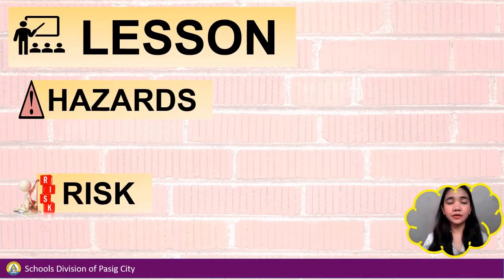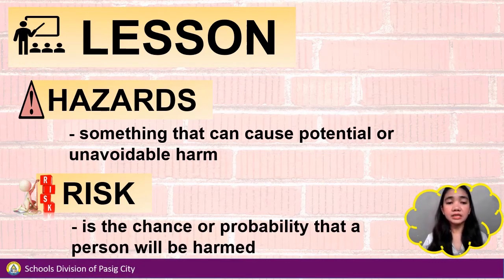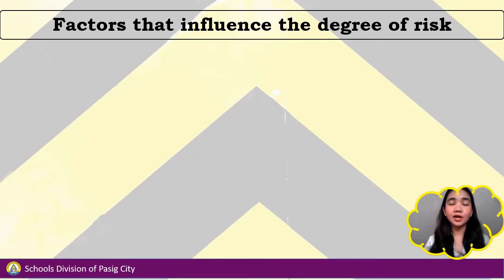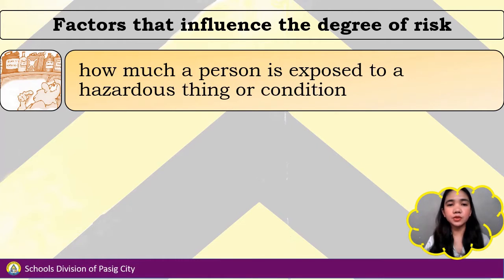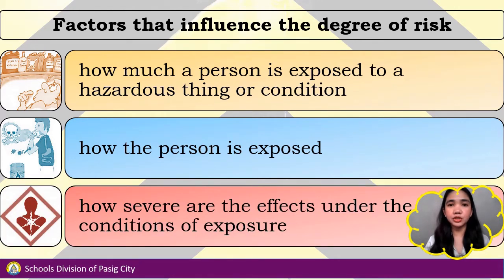Our lesson for today is about risk assessment. First, let us differentiate hazards and risk. Hazards are something that can cause potential or unavoidable harm. On the other hand, risk is the chance or probability that a person will be harmed. The factors that influence the degree of risk are: how much a person is exposed to a hazardous thing or condition, how the person is exposed — such as through skin contact or through breathing — and how severe are the effects under the conditions of exposure.